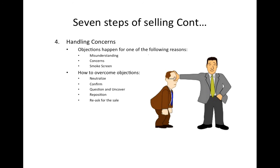But if it's a legitimate concern — like the customer saw something similar at a competitor for a hundred dollars less, talk about it. If the concern is 'I don't have the money, it's out of my budget,' talk about financing and other options. To summarize the five steps: neutralize the objection, confirm if that's the only objection today, question and uncover by asking why they feel that way, reposition yourself to explain all the features and benefits again, and then ask for the sale.